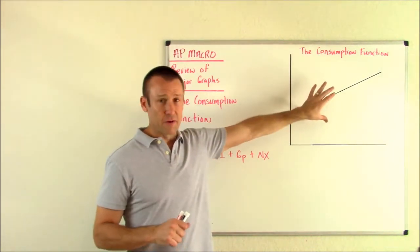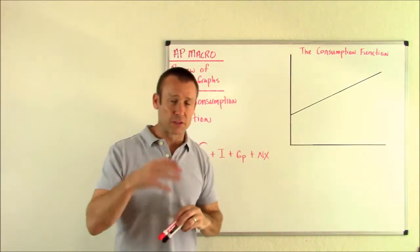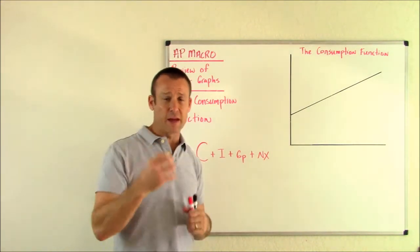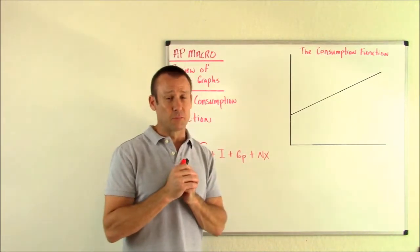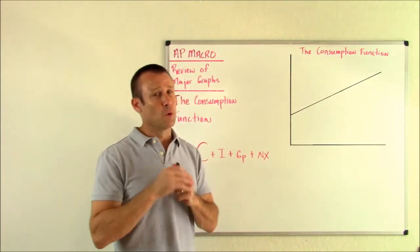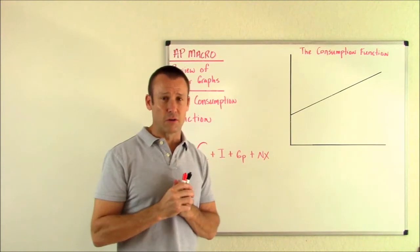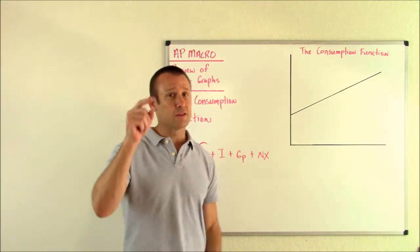All right, here we go. I've got a graph. It's going to be my consumption function. Here's how it works. In economics, we want to study consumption because it's so important, so we make a consumption function. And we say, what's the number one thing that determines our level of consumption? And what is it? Disposable income.